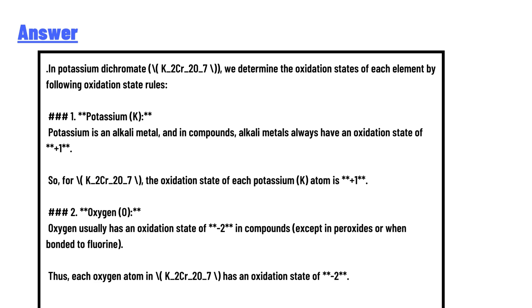Rule #2: Oxygen (O) - Oxygen usually has an oxidation state of -2 in compounds, except in peroxides or when bonded to fluorine. Thus, each oxygen atom in K2Cr2O7 has an oxidation state of -2.